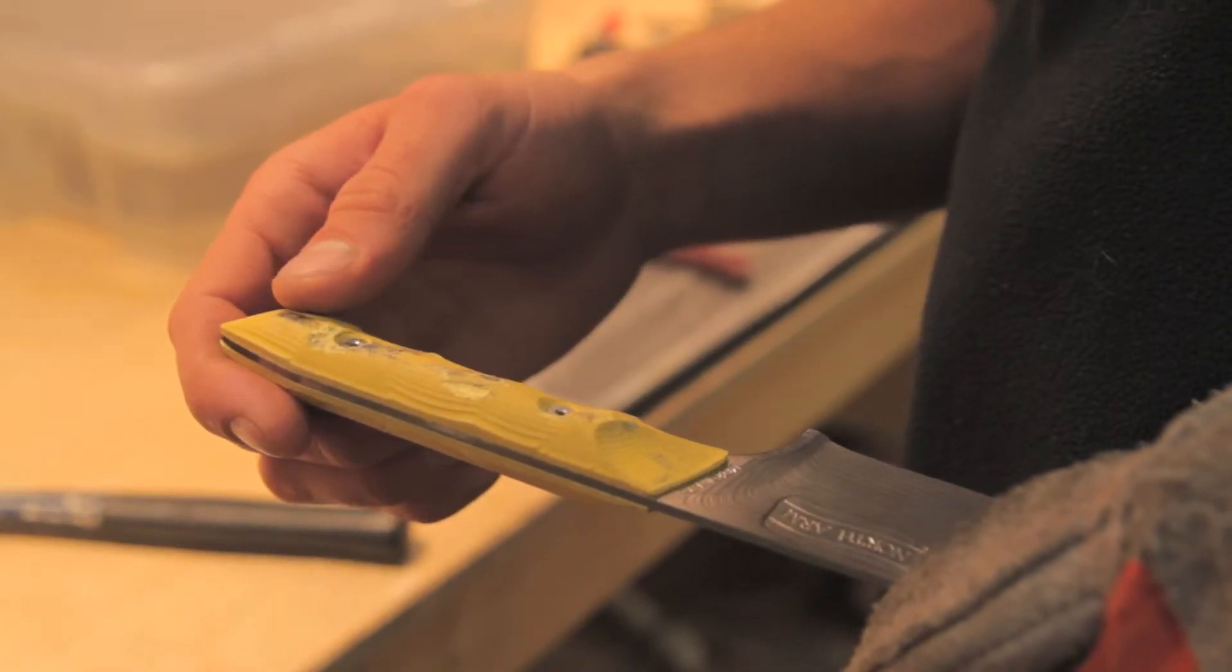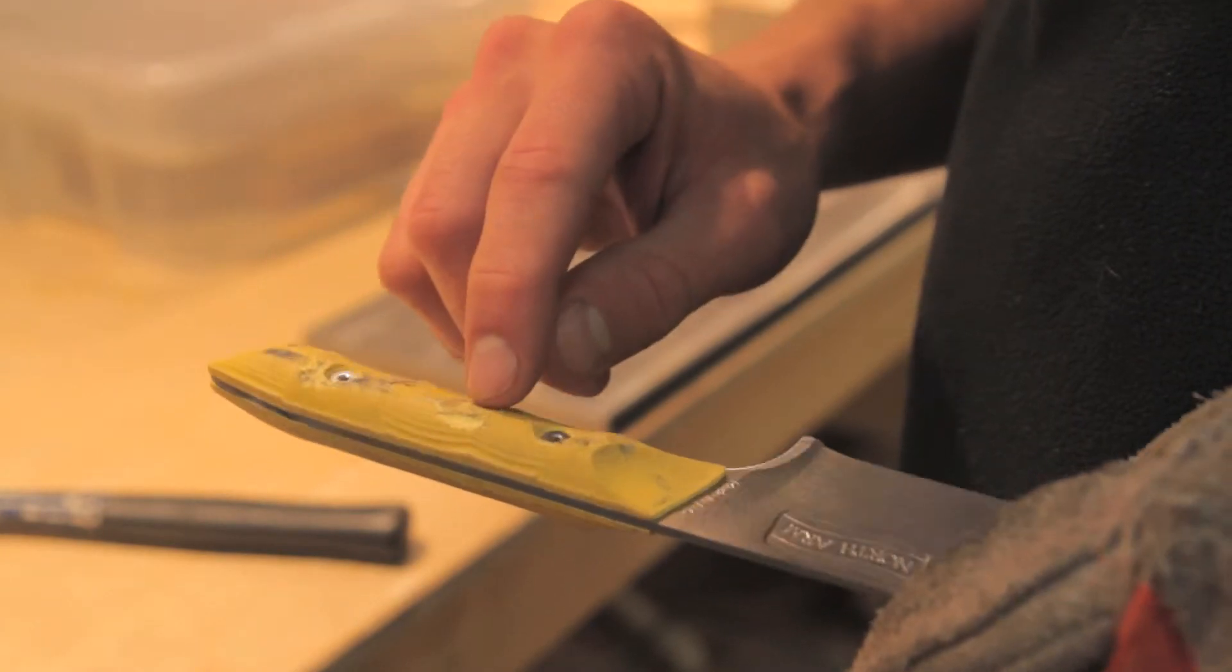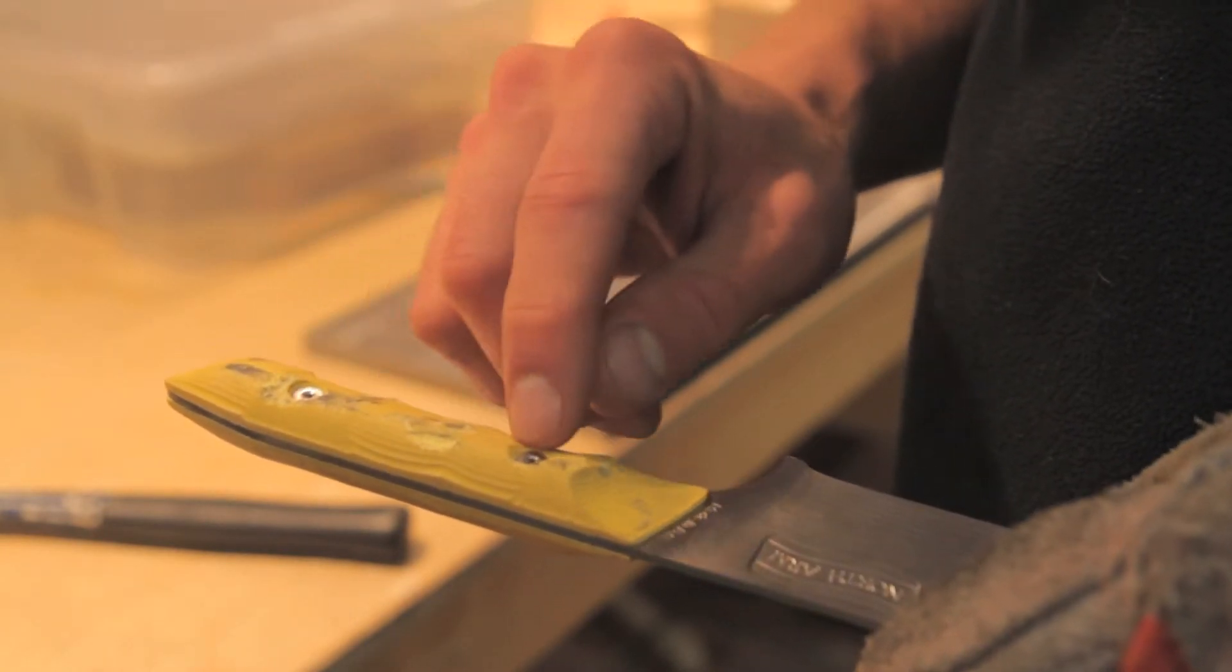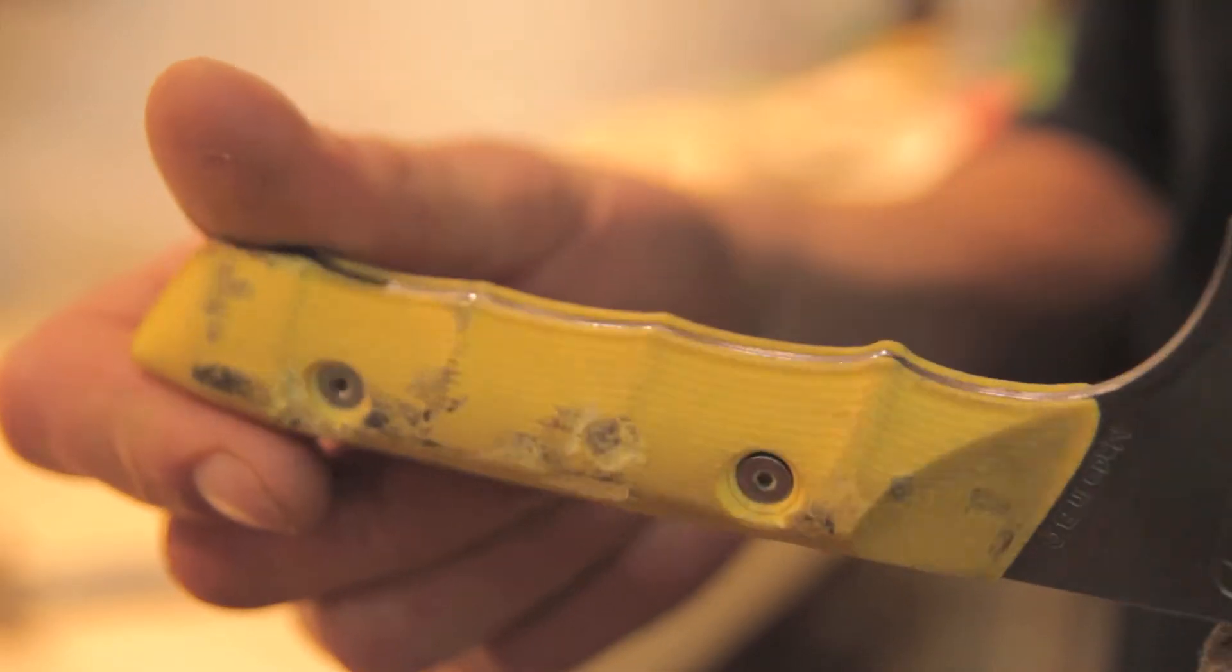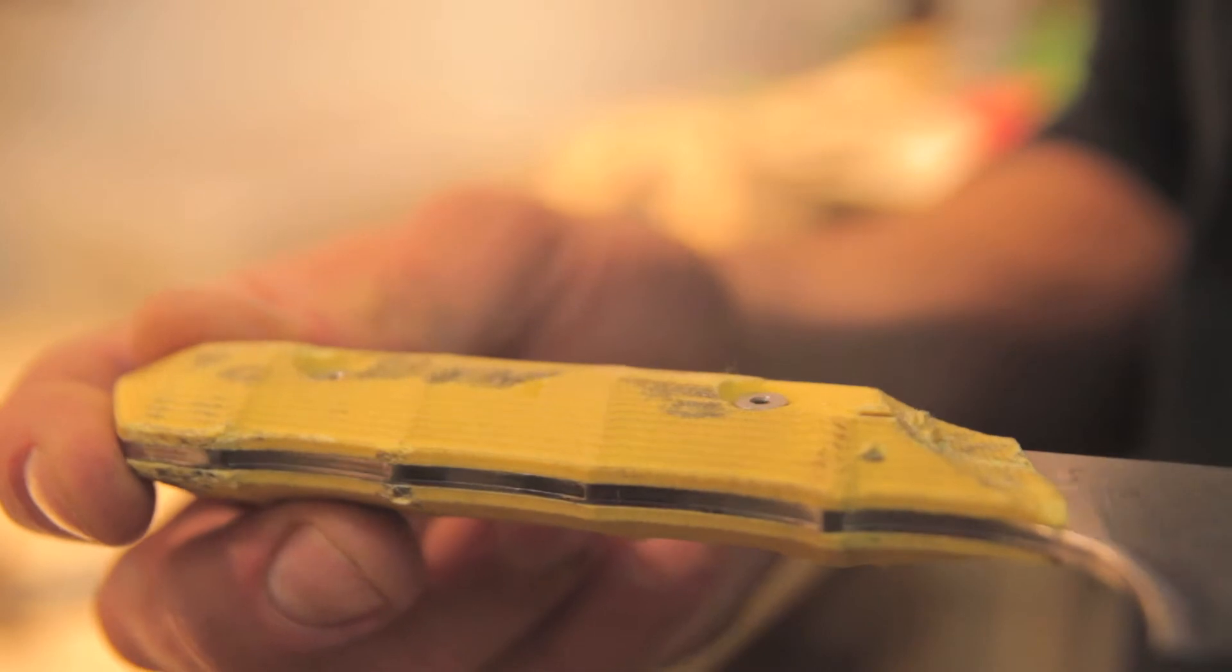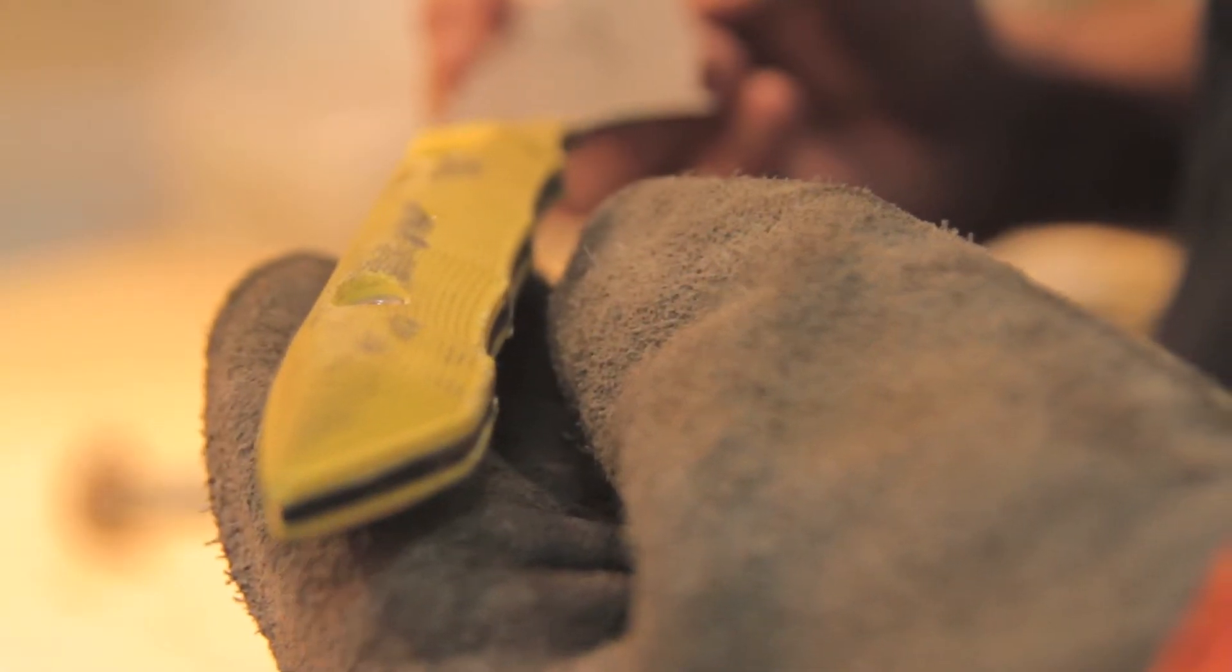So you can see the handle fared quite well there. Got some nicks and some discoloration where the metal actually rubbed off on the G10 here. But overall, no serious damage to it. Considering how hard I hit it, that's pretty great.